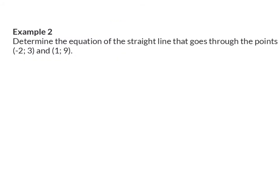Example 2. Determine the equation of the straight line that goes through the points (-2, 3) and (1, 9). When you are given two coordinates on your straight line, you can immediately start off calculating your gradient using the formula. It helps to number them as x1, y1 and x2, y2, to ensure that you don't make sign mistakes when you substitute. Substituting into y2 minus y1 over x2 minus x1 gives 6 over 3, which is a gradient of 2. So now I know that in my equation my m value is 2, and I can calculate the c value by substituting in a coordinate.